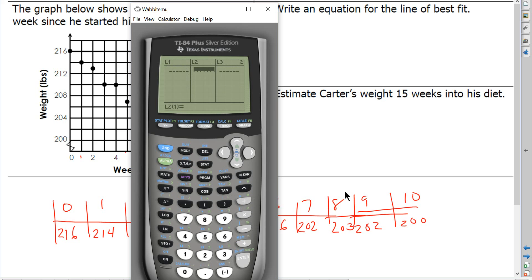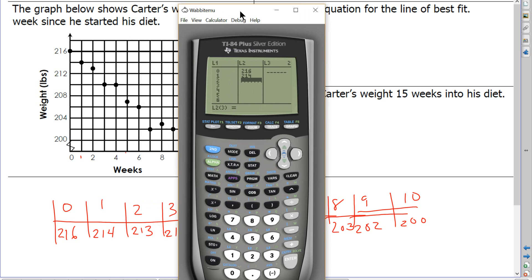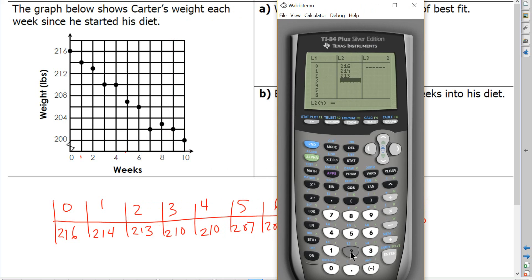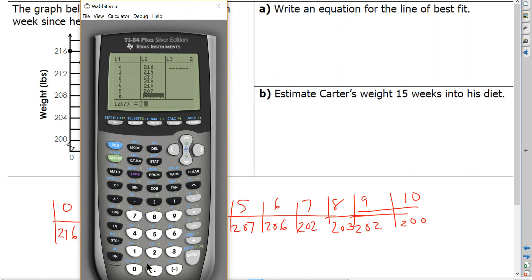So now I'm going to edit that data by pressing number 1. Looks like I'm going to go from 0 to 10. So go over to L1. 0, 1, 2, 3, 4, 5, 6, 7, 8, 9, 10. And then I'm going to go over to L2. Looks like it was 216 pounds. And it was 214 pounds. And it was 213, 210, another 210, 207. This one was 206, 202, 203, another 202. And then, finally, week 10, 200.